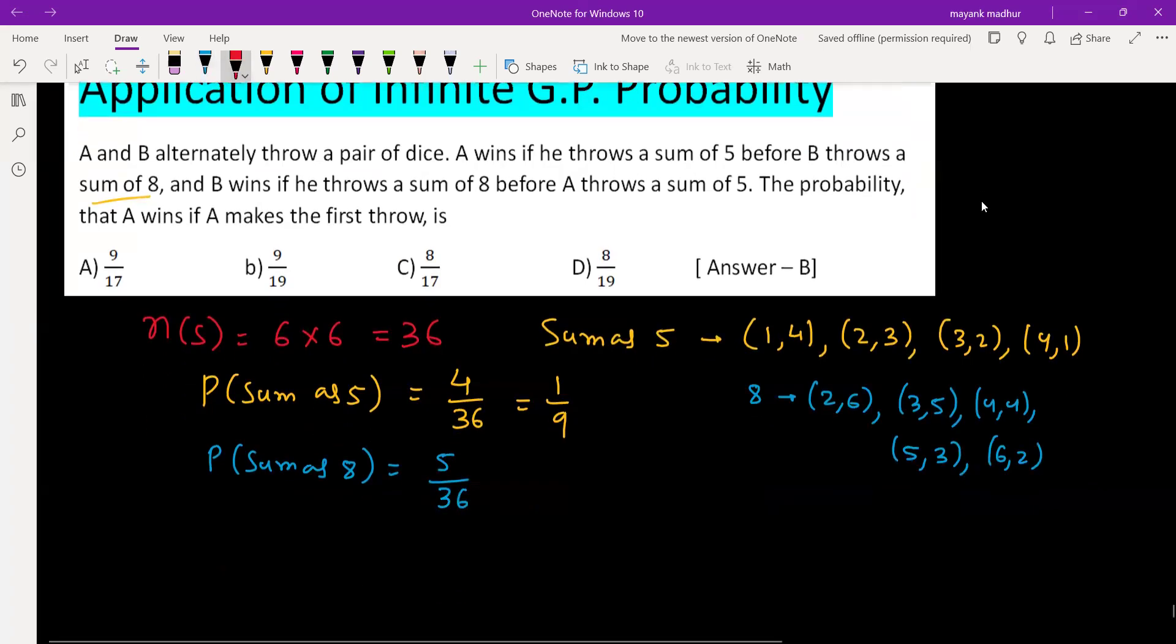A is starting first and we have to find the probability that A wins. First case: A wins immediately. Second: A is not winning, B is also not winning because we are looking for probability of A to win. Or first A will lose, then B will lose, then again A will lose, then B will lose, and finally A will win. This will form an infinite GP. Such type of questions can be done using infinite GP probability concept.